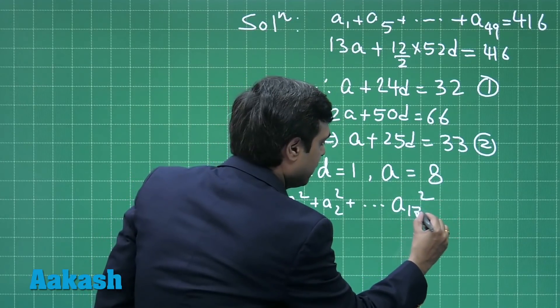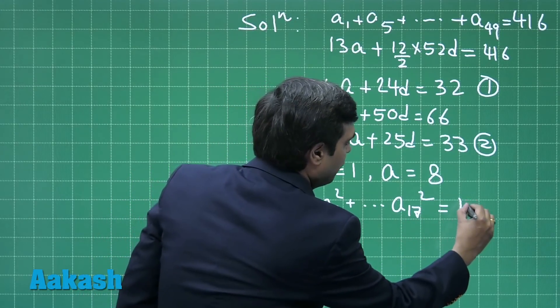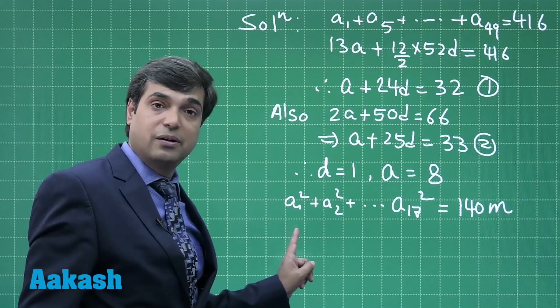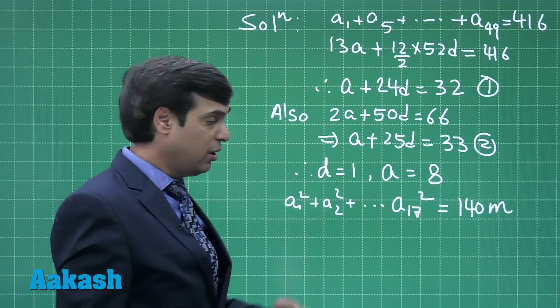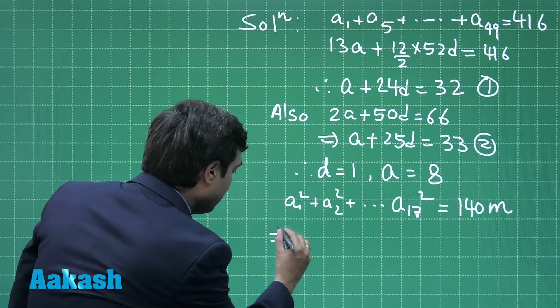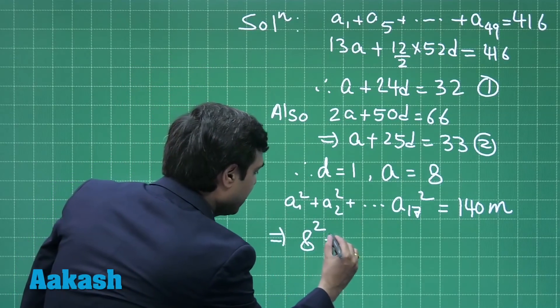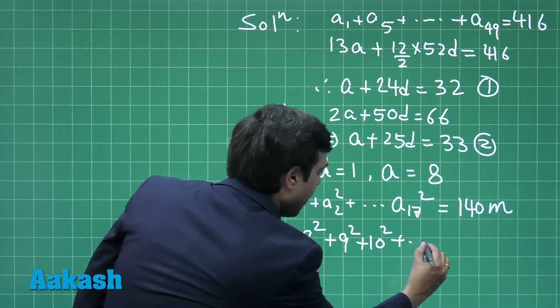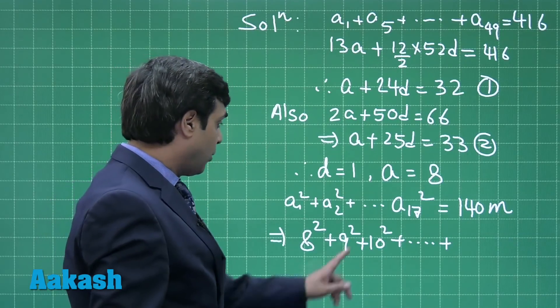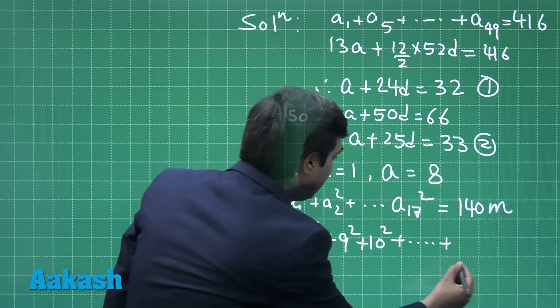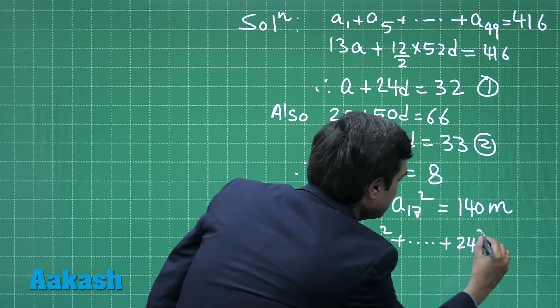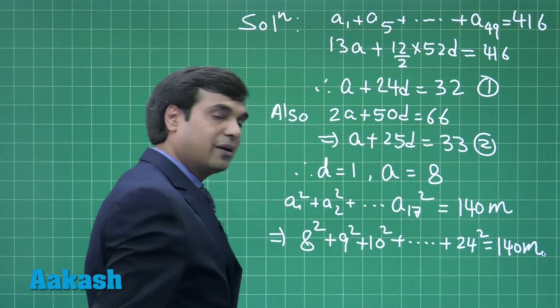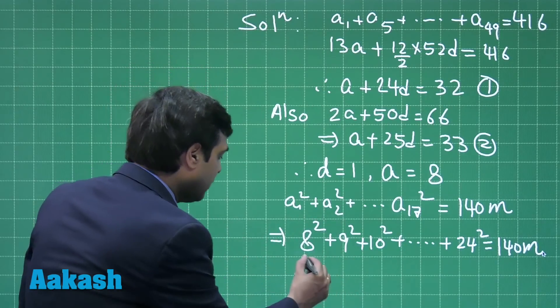is equal to 140m. What is a₁? 8. a₂? 9, and so on. So simply they are asking for 8² + 9² + 10² and so on correct. Now the last term, that is a₁₇, 24² = 140m correct. Simplify this equation. This gives you